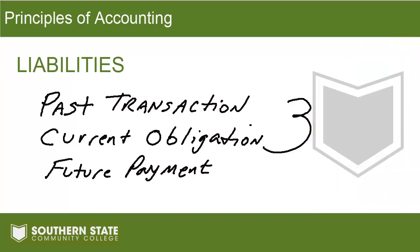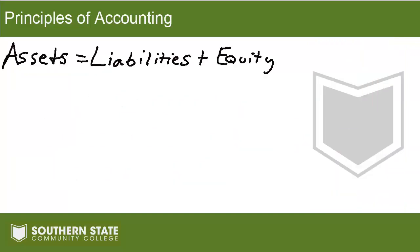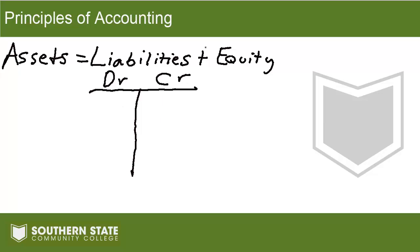Let's talk about liabilities from the standpoint of the accounting equation. Remember: assets equal liabilities plus equity — hopefully you got that in week one of accounting. Our liabilities are on the right hand side of the equation. Drawing a T-account, you'll remember debit on the left and credit on the right. Being on the right hand side of the equation means our liabilities go up on the credit side. If we want to make a liability increase we do it with a credit entry; if we want to make a liability decrease we do it with a debit entry.